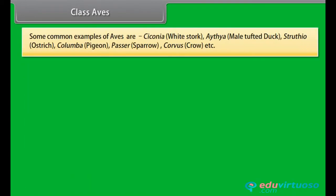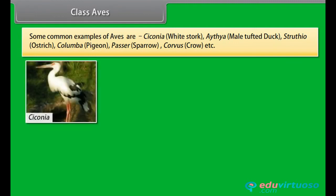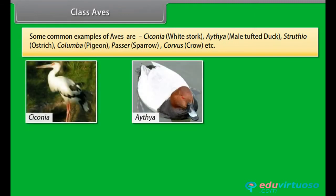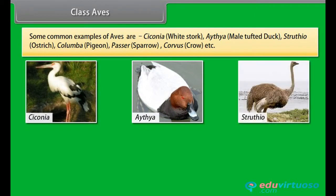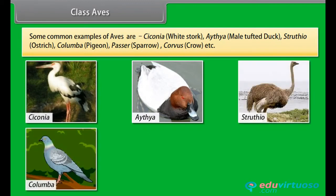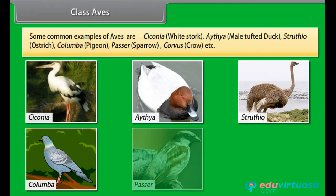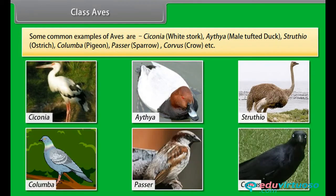Some common examples of Aves are Ciconia, White Stork, Aythya, Tufted Duck, Struthio, Ostrich, Columba, Pigeon, Passer, Sparrow, Corvus, Crow, etc.